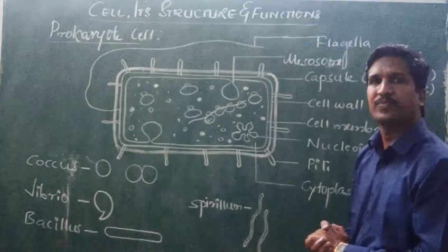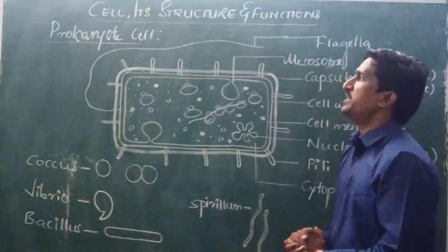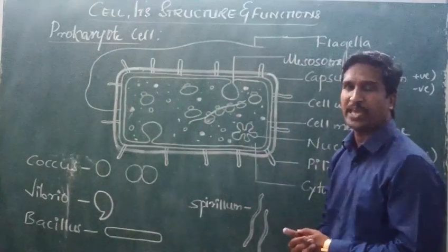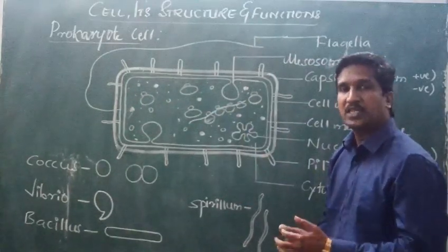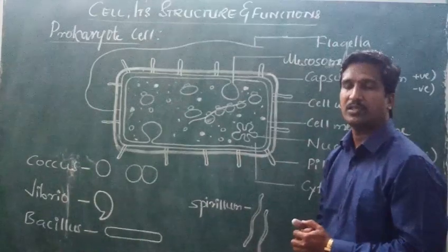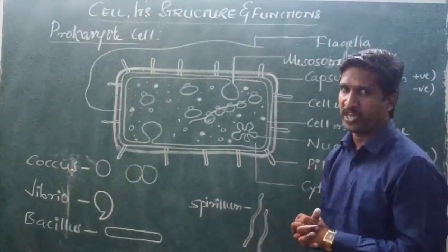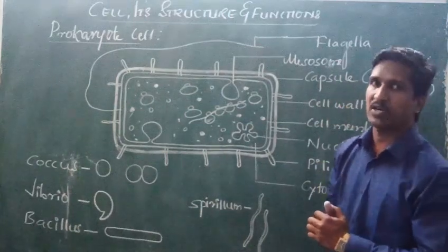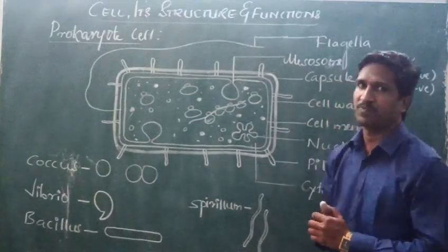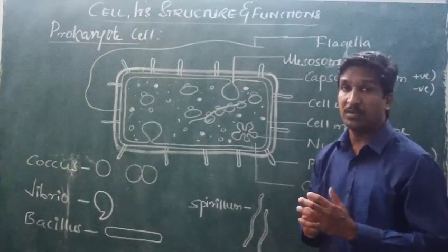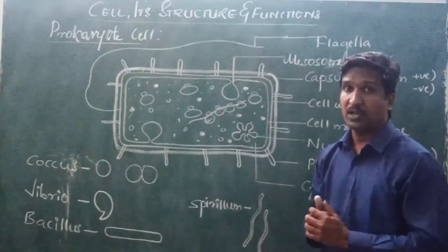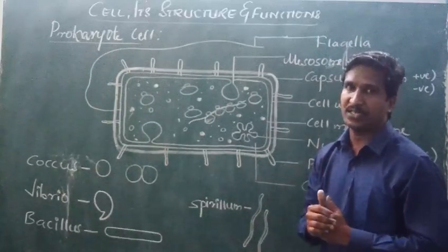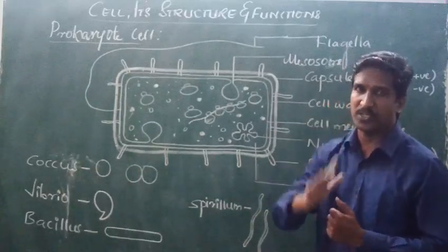Good morning, my dear students. In the previous period, you came across the definition of prokaryotic cells as well as eukaryotic cells. You studied the complete structure of prokaryotic cells. The best examples for prokaryotic cells are all Kingdom Monera organisms. Kingdom Monera contains almost all types of bacteria.